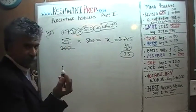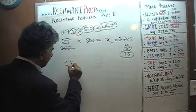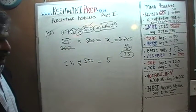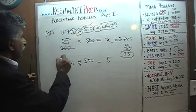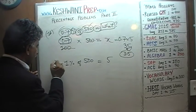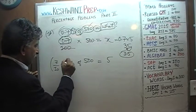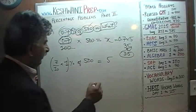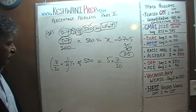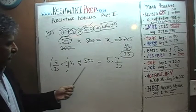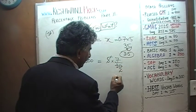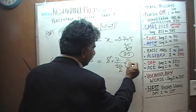Another way: 1% of 500 is 5. We want 0.7%, which is the same as seven-tenths. Multiply both sides by 7/10: 1 times 7/10 is 0.7%, and 5 times 7/10 — divide top and bottom by 5, giving us 7 over 2 — which is 3.5. Same answer.